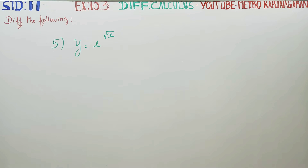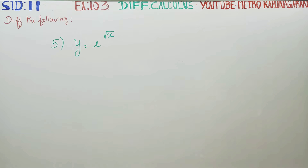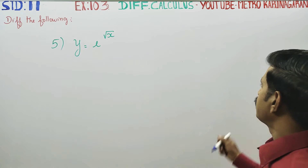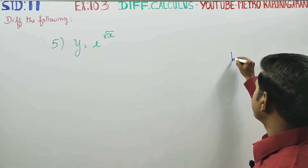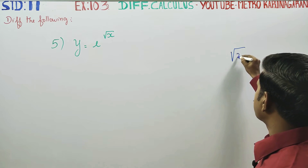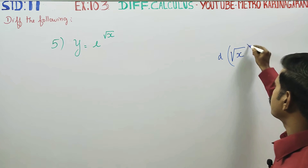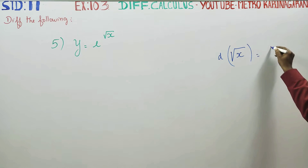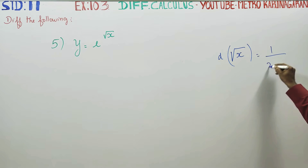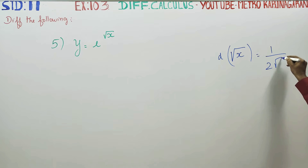Dear 11th standard students, in exercise number 10.3, sum number 5, you have to differentiate y is equal to e power root x. The differentiation of root x will be 1 by 2 root x. This is the formula for root x.